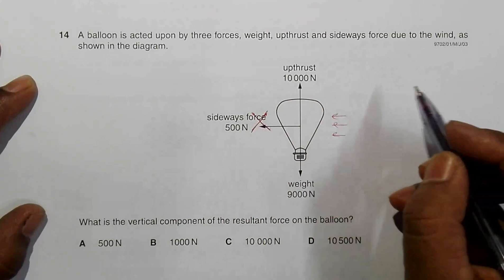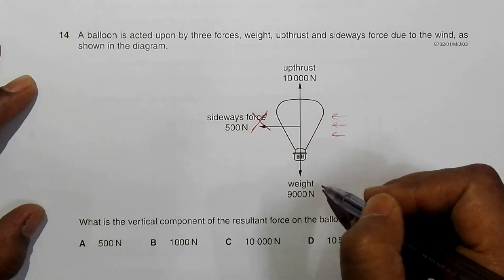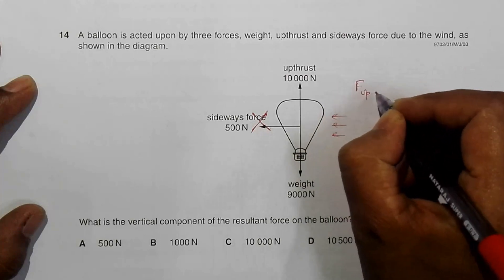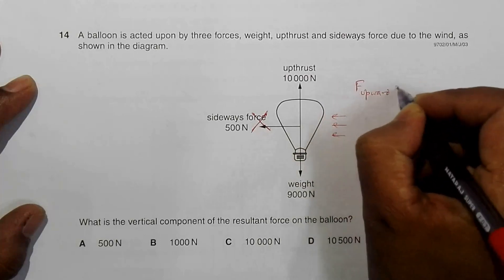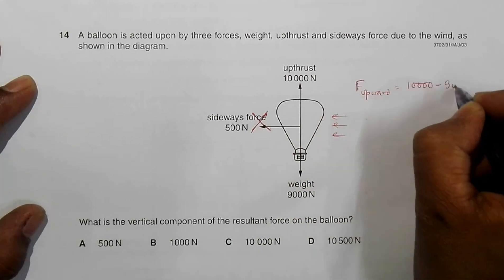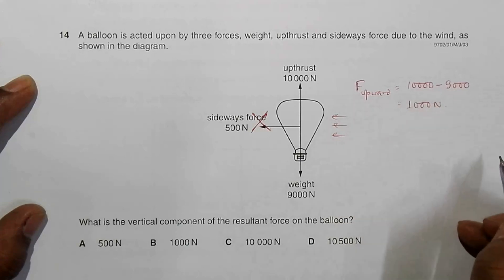Regarding these two, the upthrust upward is 10,000 and the downward force is 9,000. The resultant upward force should be equal to 10,000 minus 9,000, so it's equal to 1,000 Newton in upward direction.